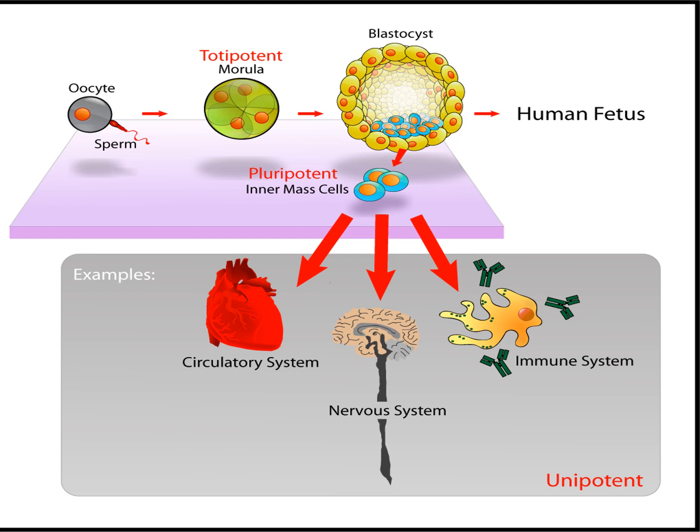The single zygote cell then begins a series of divisions forming two, four, eight, sixteen cells, etc. After four to six days, before implantation in the uterus, this mass of cells is generally called the blastocyst. Before the blastocyst stage there is a Morula stage, which has a totipotent character. After becoming a blastocyst, the cells begin to develop specialized characteristics.